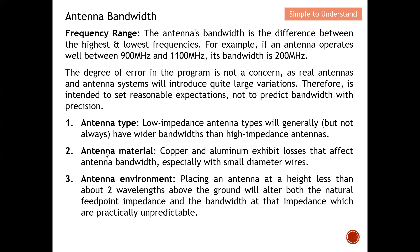On the antenna material: typically we use copper or aluminium, which are cheap and available. They still exhibit loss that may affect the antenna bandwidth. Hence, it is very important to use the correct diameter wire. If we use a very small diameter wire, the loss will be bigger. We want to use a reasonably large diameter so that the loss is minimized.